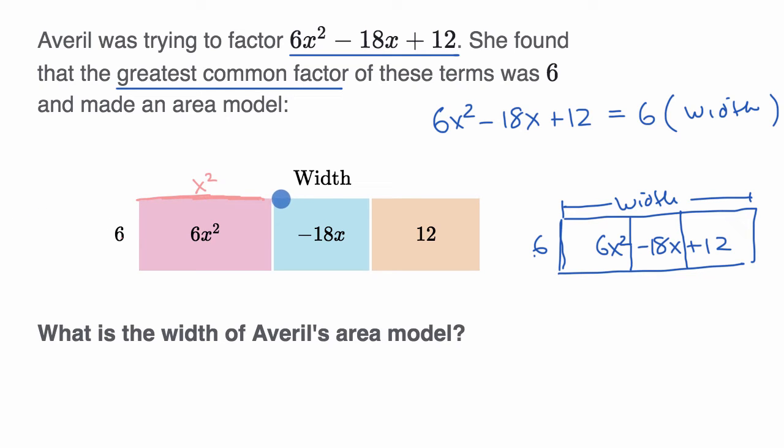Now what about this blue area? A height of 6 times what width is equal to -18x? So let's see, if I take 6 times -3, I get -18. But then I have to multiply it times an x as well to get -18x. So 6 times -3x is -18x.